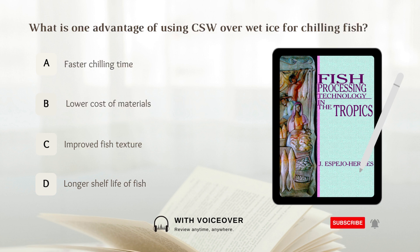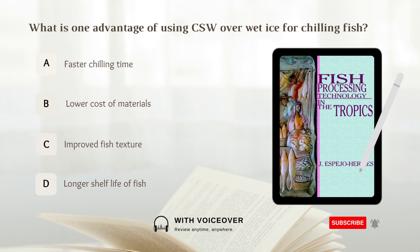What is one advantage of using chilled seawater over wet ice for chilling fish? A. Faster chilling time. B. Lower cost of materials. C. Improved fish texture. D. Longer shelf life of fish. Answer: A. Faster chilling time.